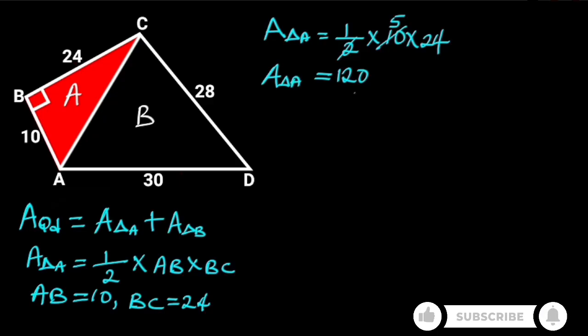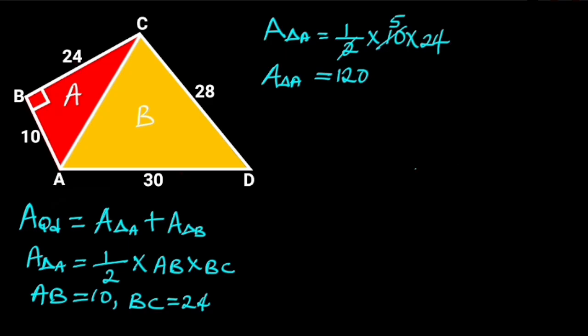Next, let's find the area of triangle B. Before we do that, let's find the value of the remaining side of the triangle, that is AC. To find AC, we are going to apply Pythagoras theorem in triangle ABC. From Pythagoras theorem, AC squared is equal to AB squared plus BC squared.